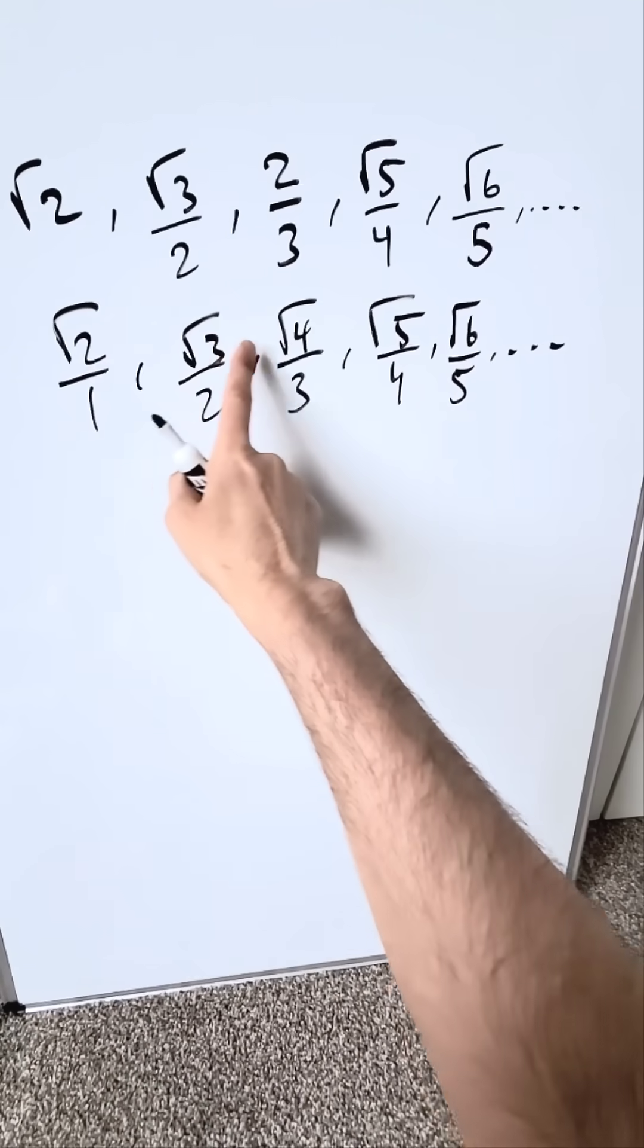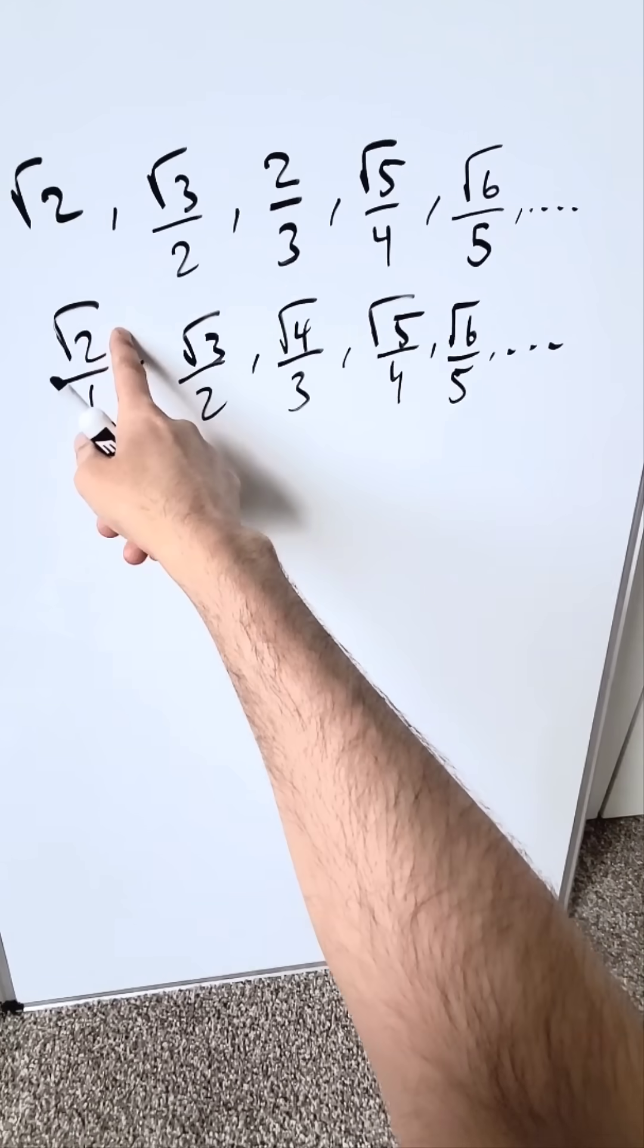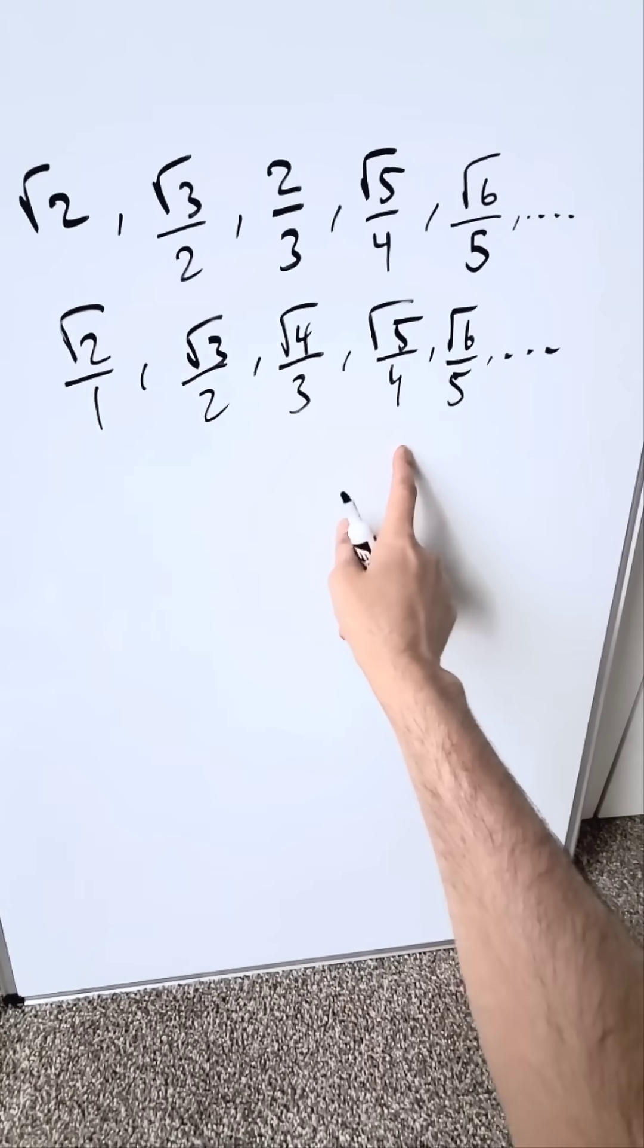You're seeing here the numerator value is increasing by 1, so is the denominator. The numerator value is always 1 more than the denominator value.